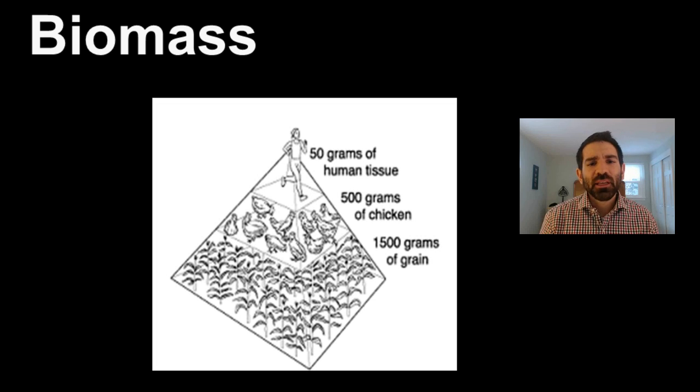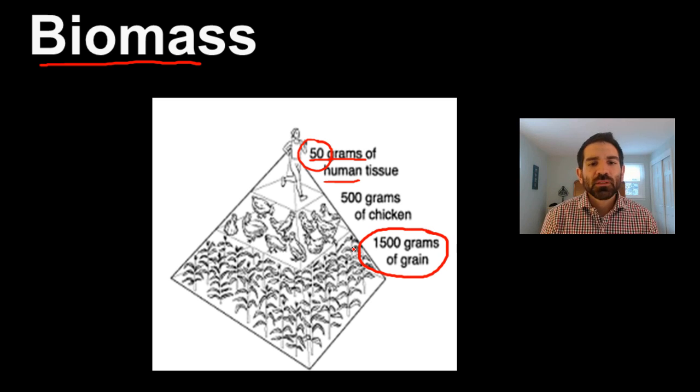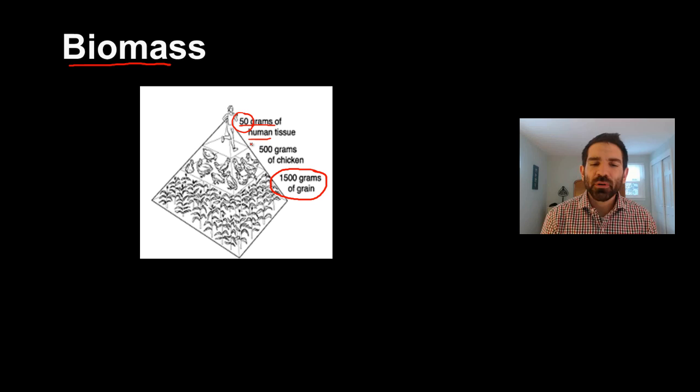The last thing I want to talk about is a similar pyramid thing, except this is about biomass. And bio is life, and mass is material. So this is living material. We're going to support 50 grams of human tissue. That's not a whole human, it's just some portion of it. But that human is eating chickens, but those chickens are eating grains. So it takes, in this biomass pyramid, about 1,500 grams of grain to support 50 grams of human tissue. So it takes a lot of plants to support a human.